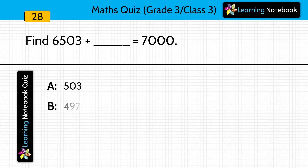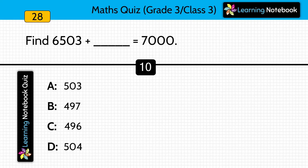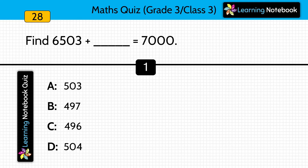Find: 6503 plus dash equals to 7000. What should be added to 6503 so that the sum is 7000? Answer is option B, 497.